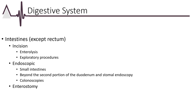Enterolysis is the freeing of intestinal adhesions. There are several procedures for exploration of different parts of the intestinal tract, including biopsies and removal of foreign bodies. The endoscopy category includes codes for diagnostic or surgical procedures on the small intestine and stomal endoscopies — note whether the code begins through a stoma. Procedures include removal of a foreign body, ablation of tumors, and biopsies. Also note how far the scope is advanced. An enterostomy is a procedure to make a passageway from the skin into a portion of the small intestines, placed temporarily or permanently for drainage or tube feeding.